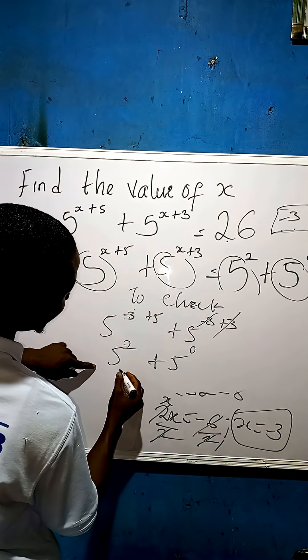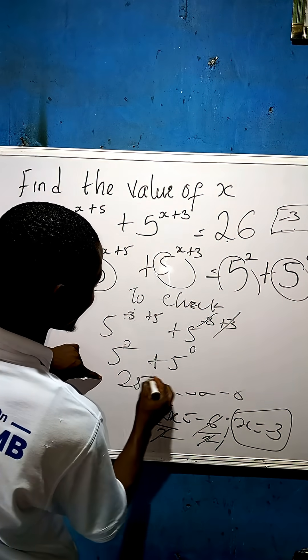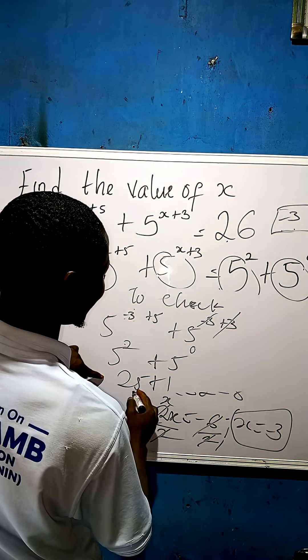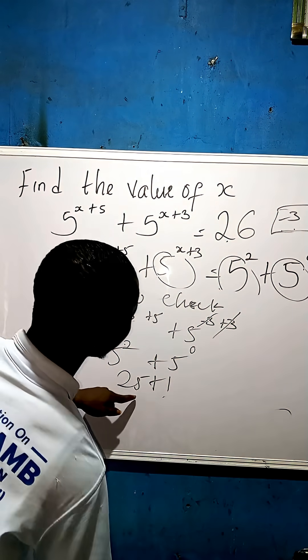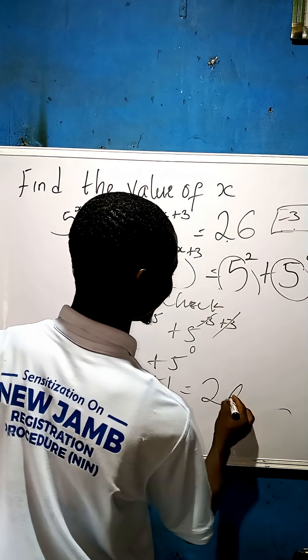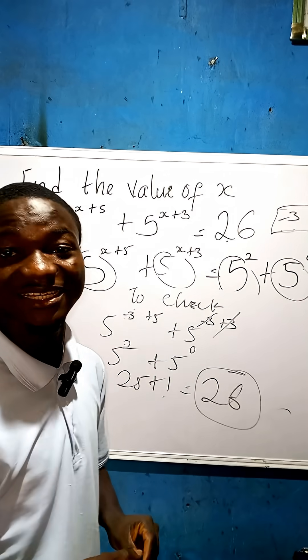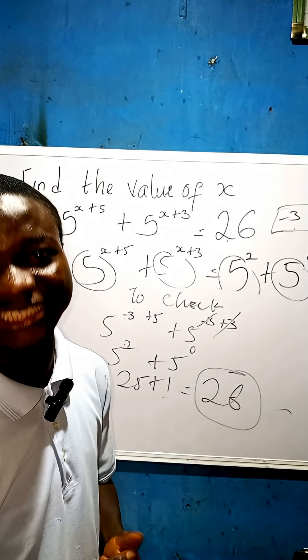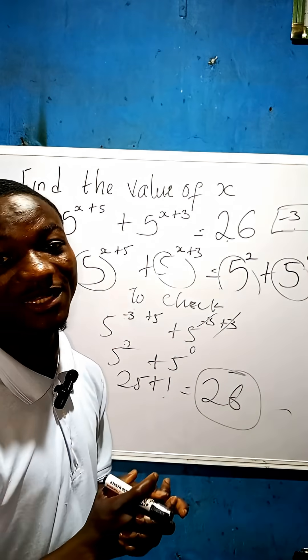So 5 to the power of 2 is 25, plus 5 to the power of 0 is 1. So you are left with 26. 26 plus 1 is what? 26. Guys, like and share. Thank you and God bless you.